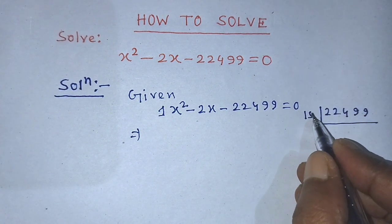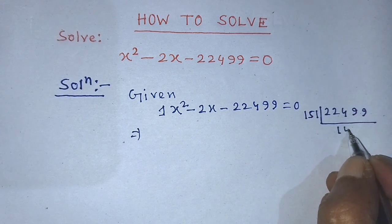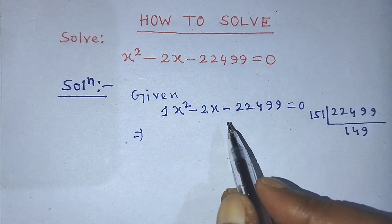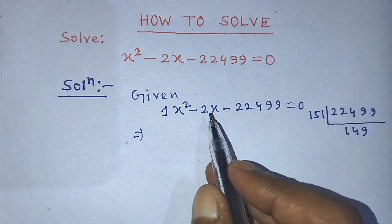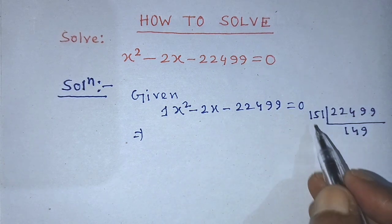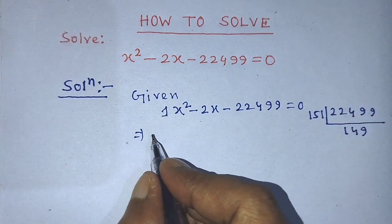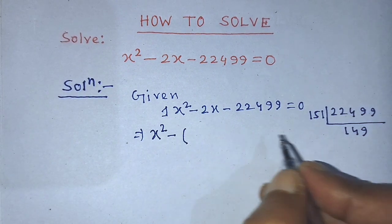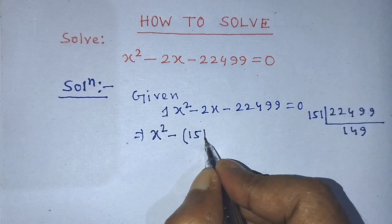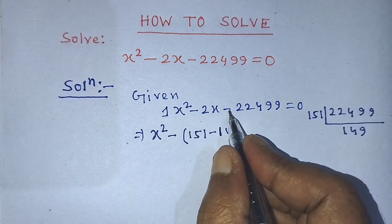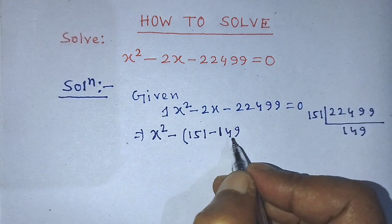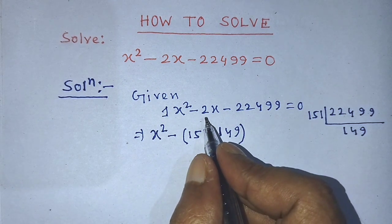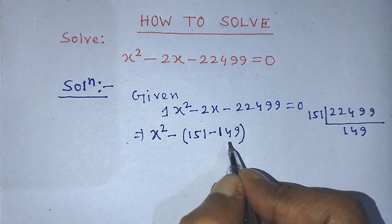The product of 1 and 22,499 is 22,499. We have to factorize this number. If you multiply 151 by 149, then you get 22,499. To factorize the left-hand side, we need to bring the number 2 by using this factor pair. Since 151 minus 149 equals 2, we write 151 minus 149 in place of 2.